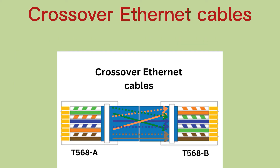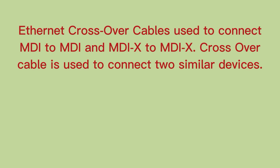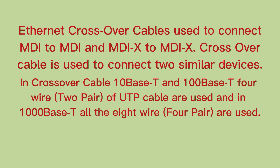In a crossover Ethernet cable, both ends are terminated with different standards — EIA/TIA 568A on one end and EIA/TIA 568B on the other. Crossover cables are used to connect MDI to MDI or MDI-X to MDI-X, i.e., two similar devices. In crossover cables, 10BaseT and 100BaseT4 use two pairs of UTP cable, while 1000BaseT uses all four pairs.